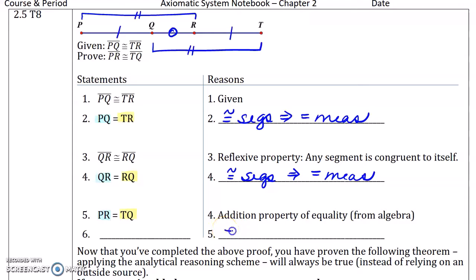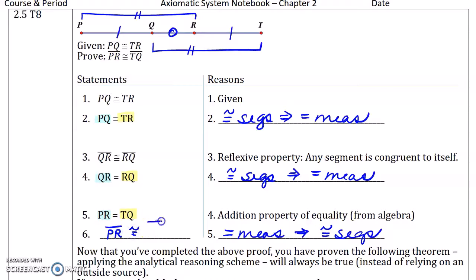So now we can say if we have equal measure, then we have congruent segments. Therefore, segment PR is congruent to segment TQ.